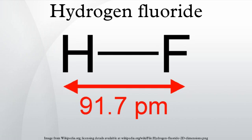HF does not boil until 20°C, in contrast to the heavier hydrogen halides which boil between −85°C and −35°C. HF is fully miscible with water, while the other hydrogen halides have large solubility gaps with water. HF and water also form several compounds in the solid state, most notably a 1:1 compound that does not melt until −40°C, which is 44°C above the melting point of pure HF.